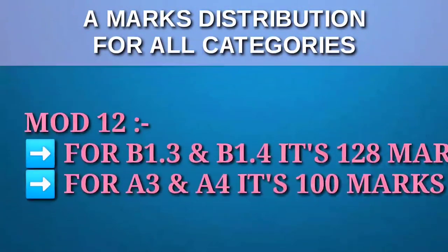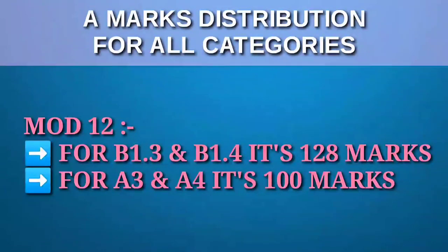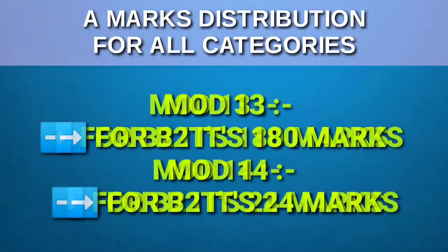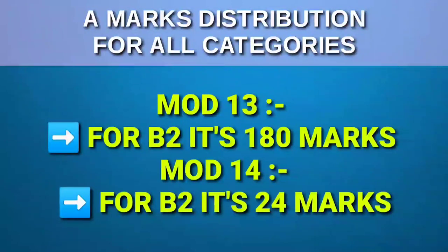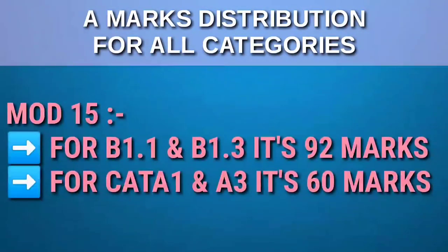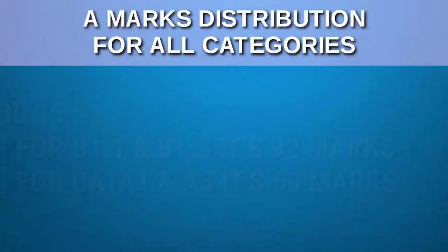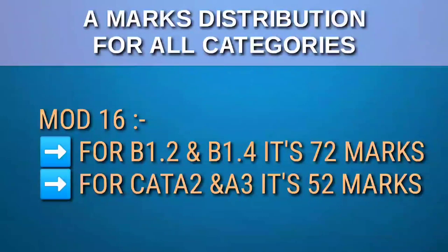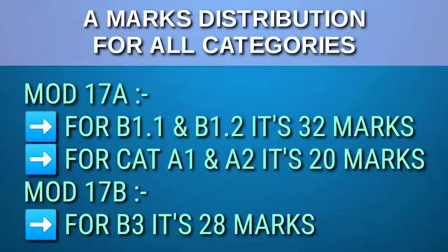Module 12 is of 128 marks for B1.3 and B1.4, and 100 marks for category A3 and A4. Module 13 is for B2 Avionics, it's 180 marks and it's the biggest AME module. Module 14 for B2 is 24 marks. Module 15 for B1.1 and B1.3 is 92 marks and for category A1 and A3 it's 60 marks. Module 16 is for B1.2 and B1.4 and it's 72 marks, while for A2 and A3 it's 60 marks. Module 17B is dedicated to B3 and is 28 marks.